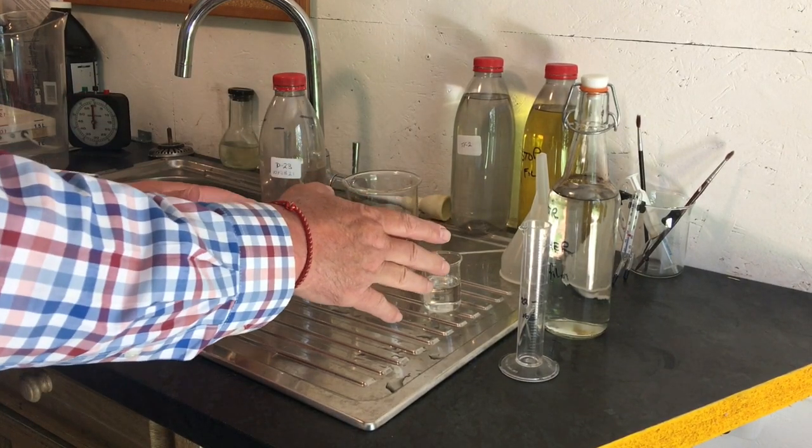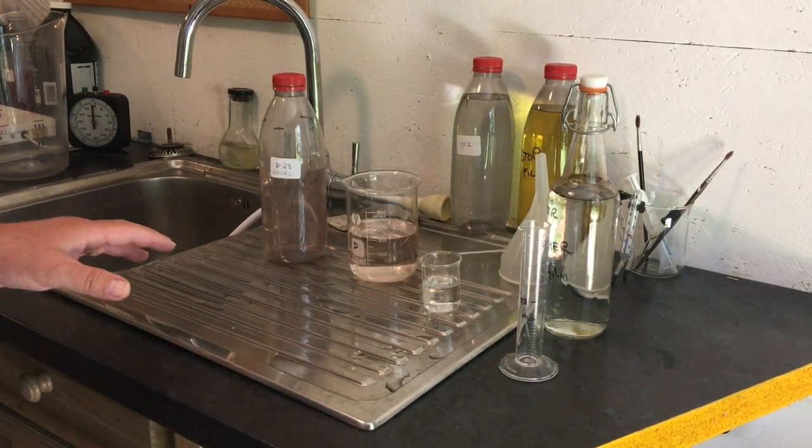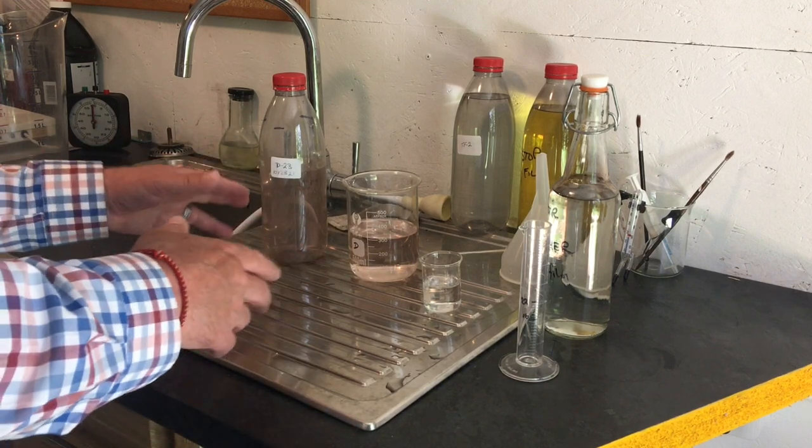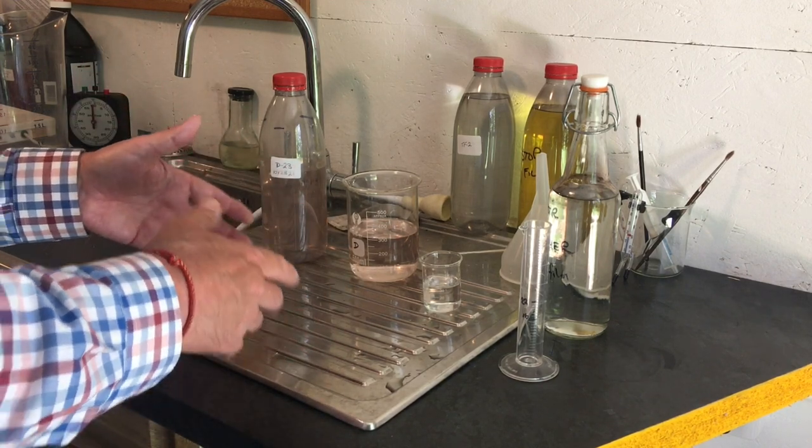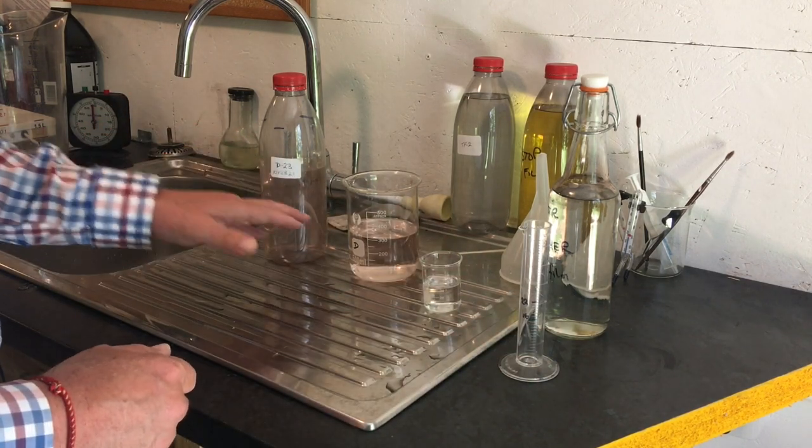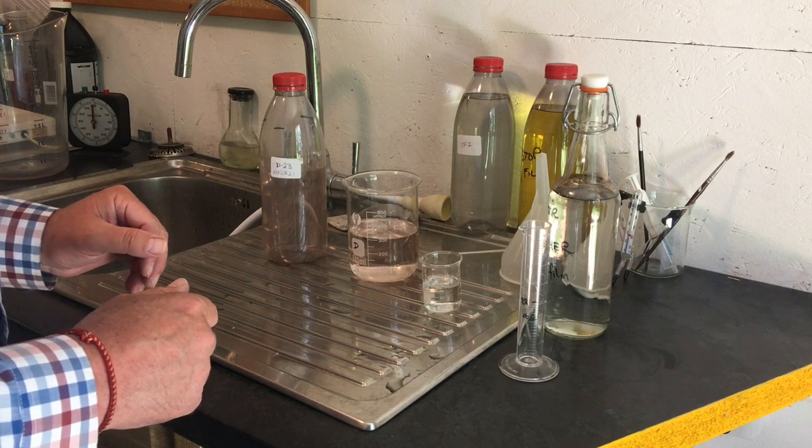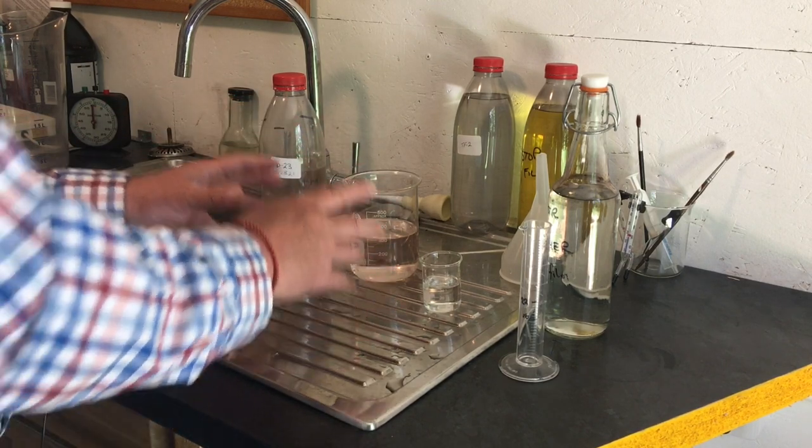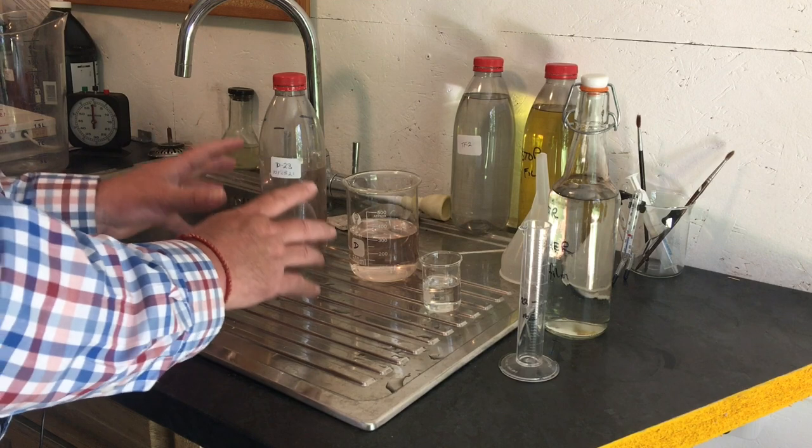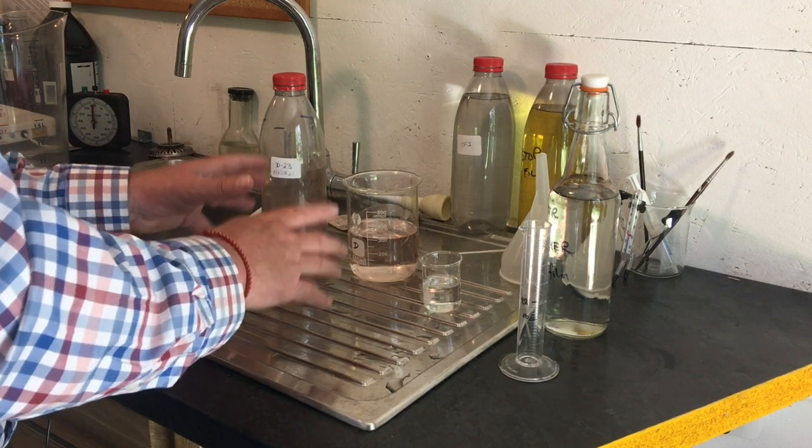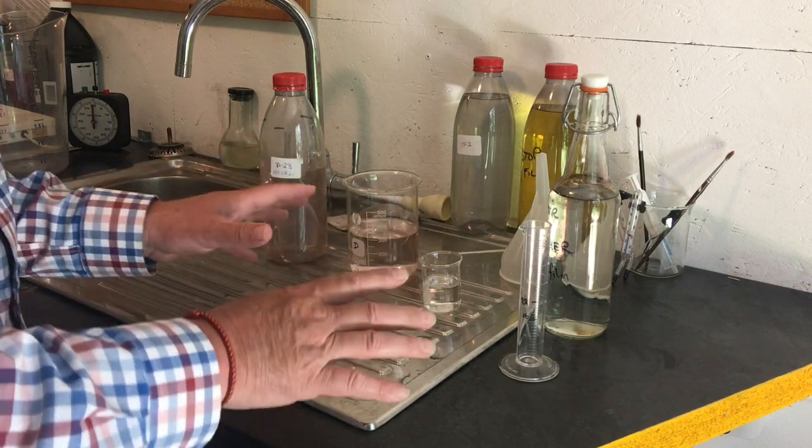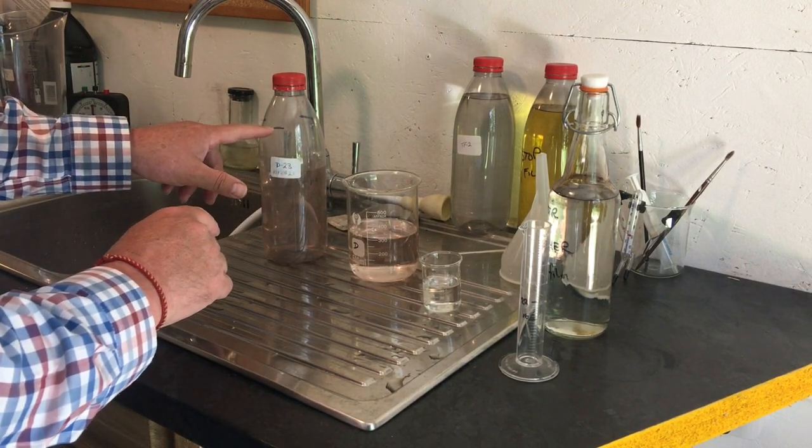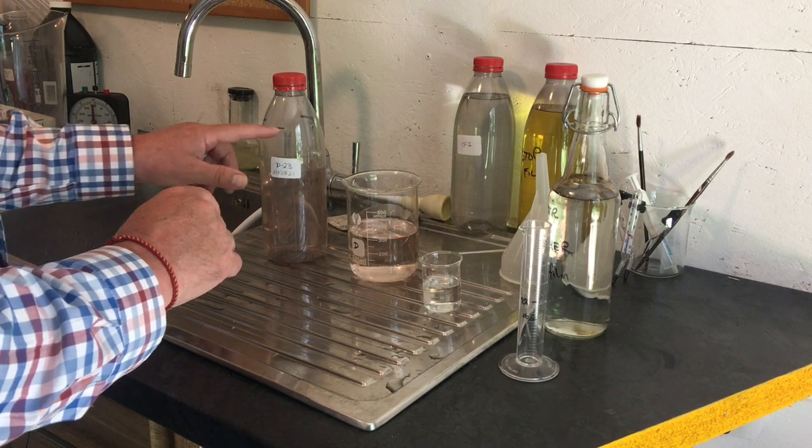So now that we've made our replenisher how do we use it? Well there's a couple of rules to follow. First of all we reuse our D23 from this bottle for about three films. That's three 36 exposure 35mm films or three 120 films or the equivalent. We keep pouring the used developer back into the bottle. Now this is called ripening. You're ripening the developer. The byproducts from development are going back into the developer, and it's these byproducts which is going to make this D23 better and better with use.